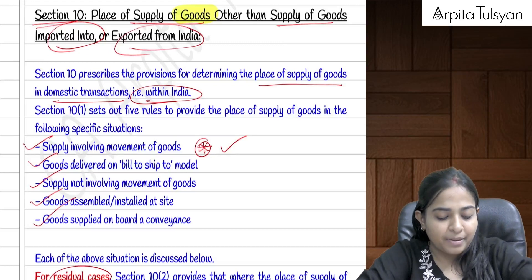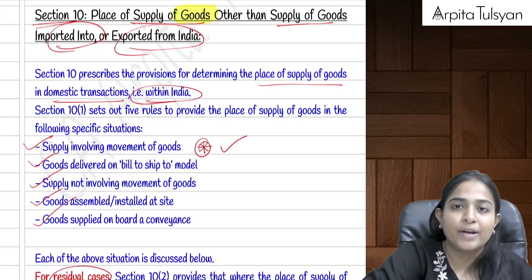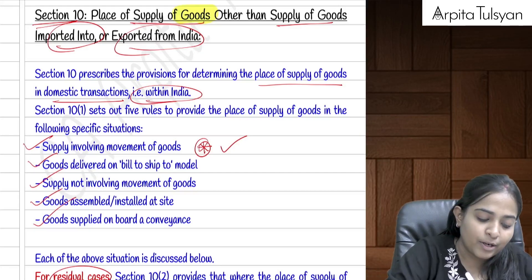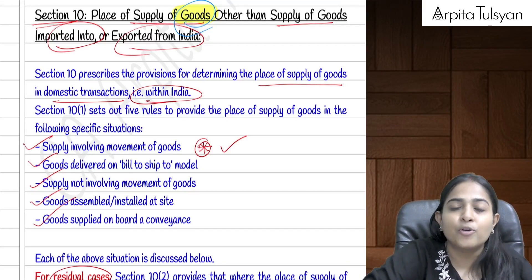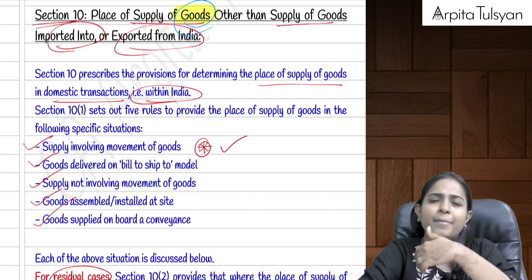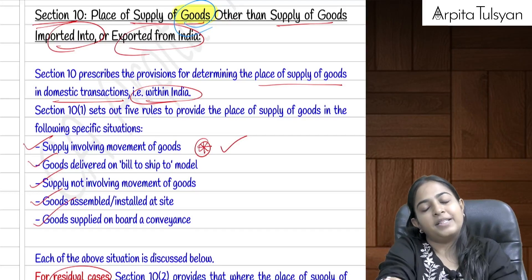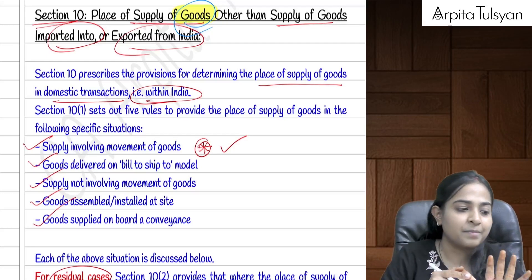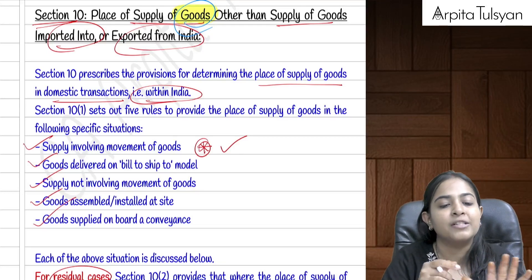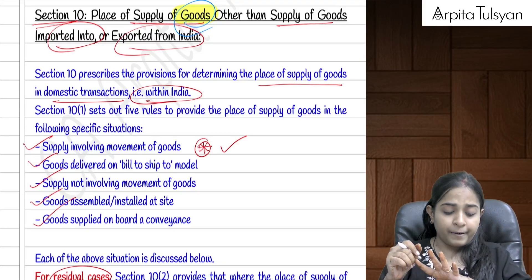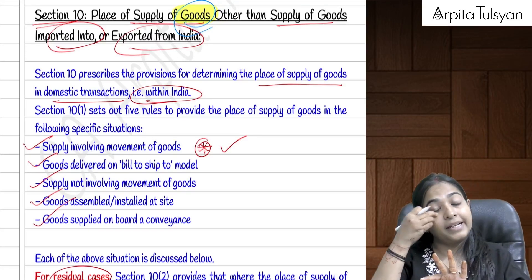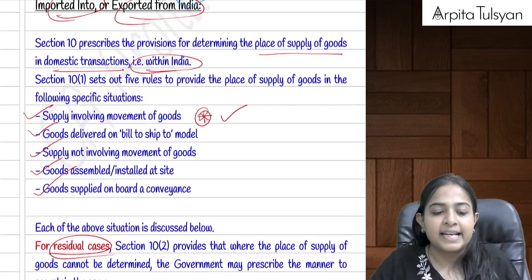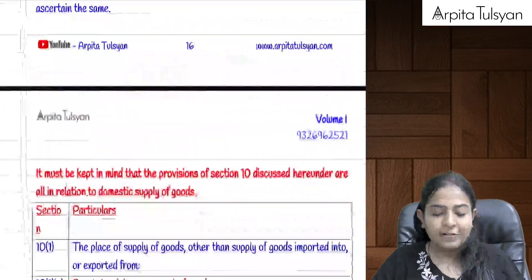Section 10 deals with the determination of place of supply for goods — specifically domestic transactions, not import or export. Five circumstances are covered: normal supply involving movement of goods, supply not involving movement of goods, bill-to ship-to model, installation of goods, and goods supplied on board a conveyance.